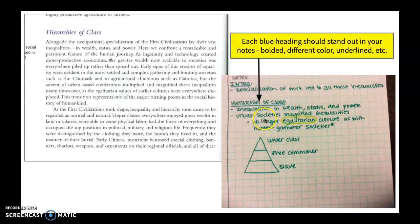So here I put urban societies magnified inequalities. I found that here urban based civilizations. Remember, urban means city. And the second thing here is no longer egalitarian culture as with hunter gatherer societies.